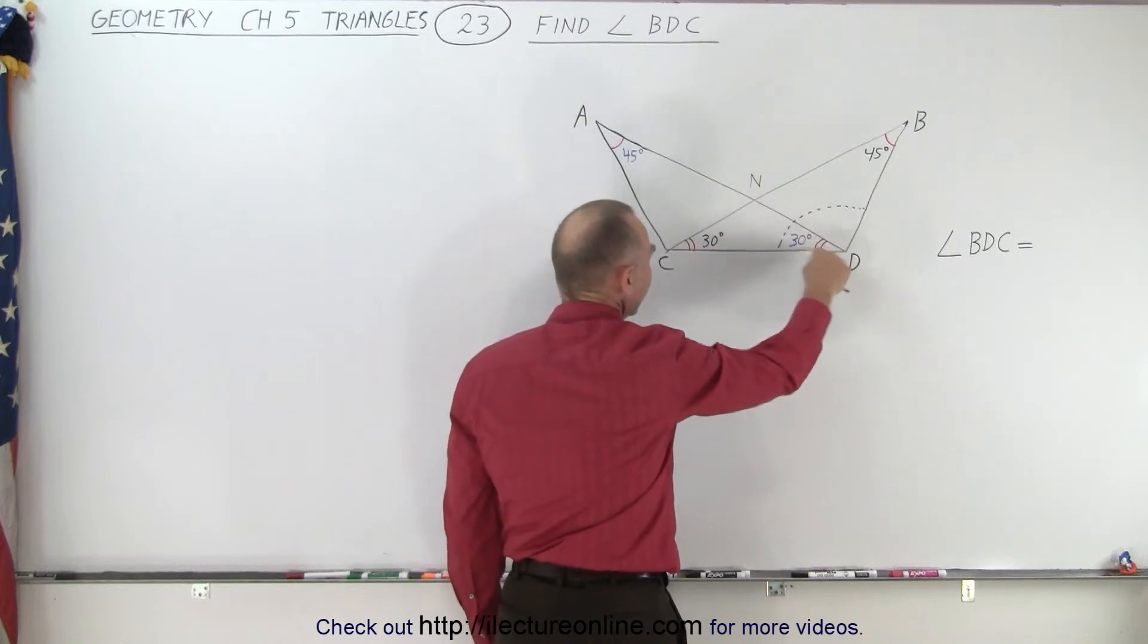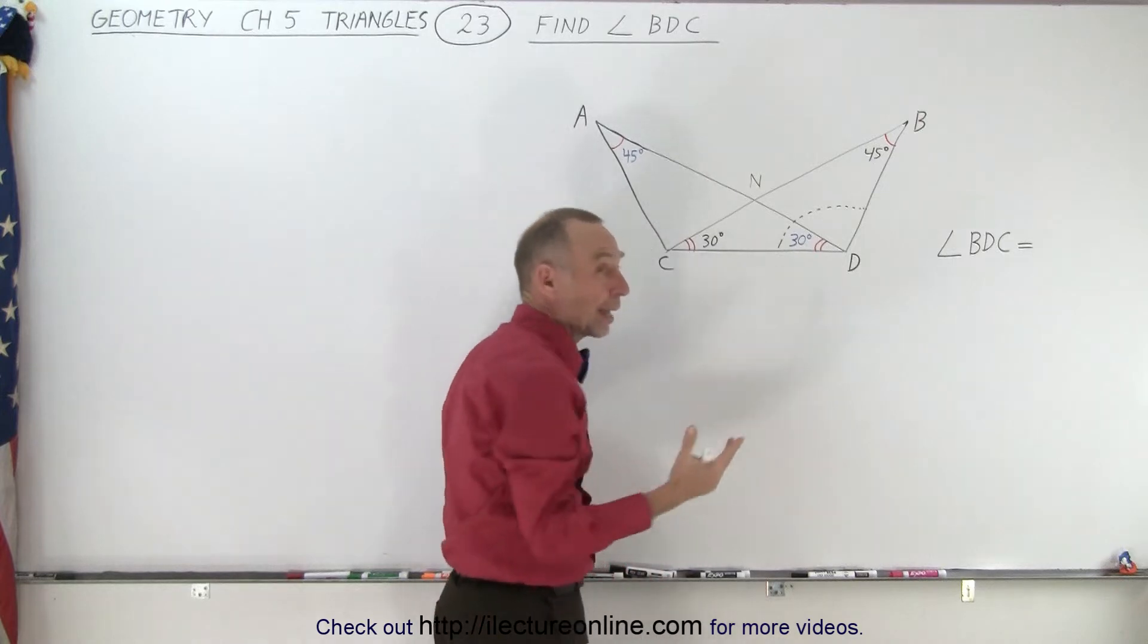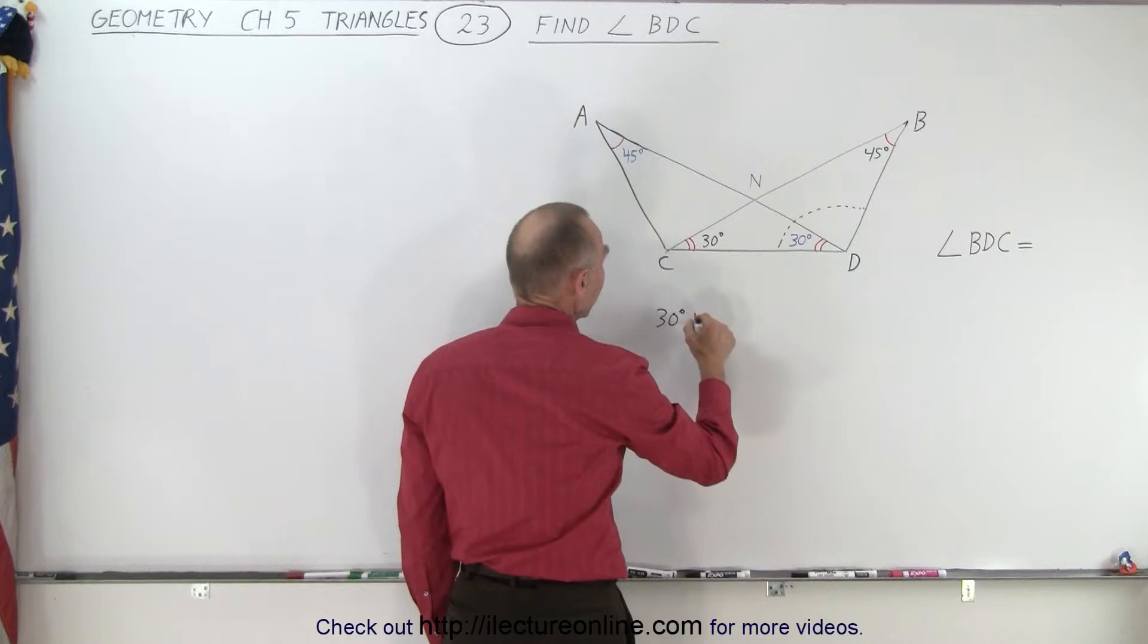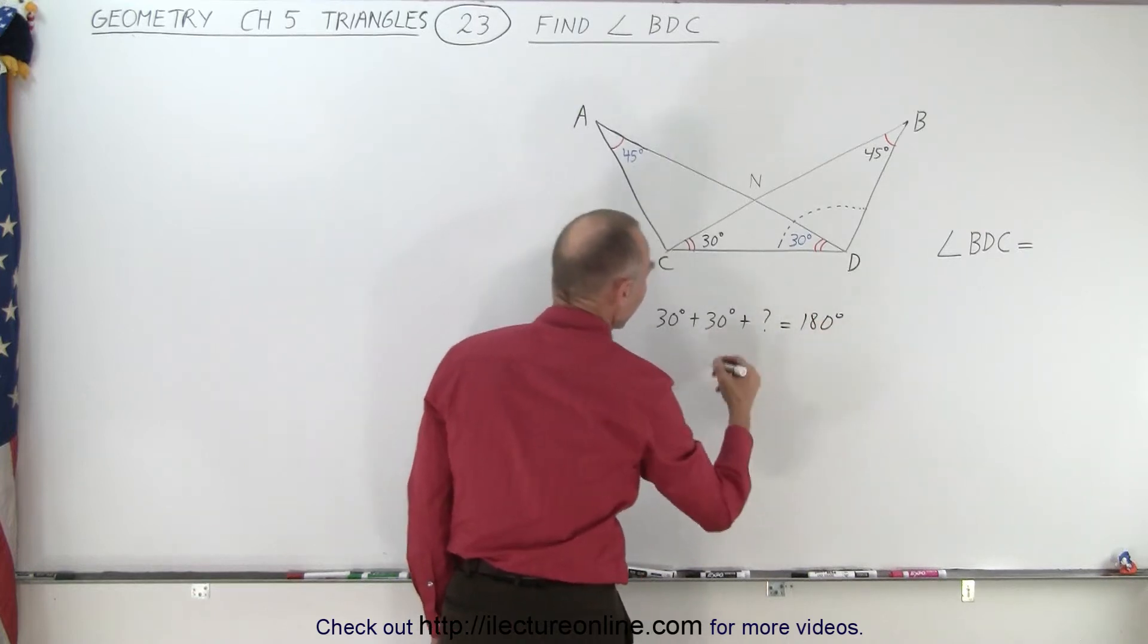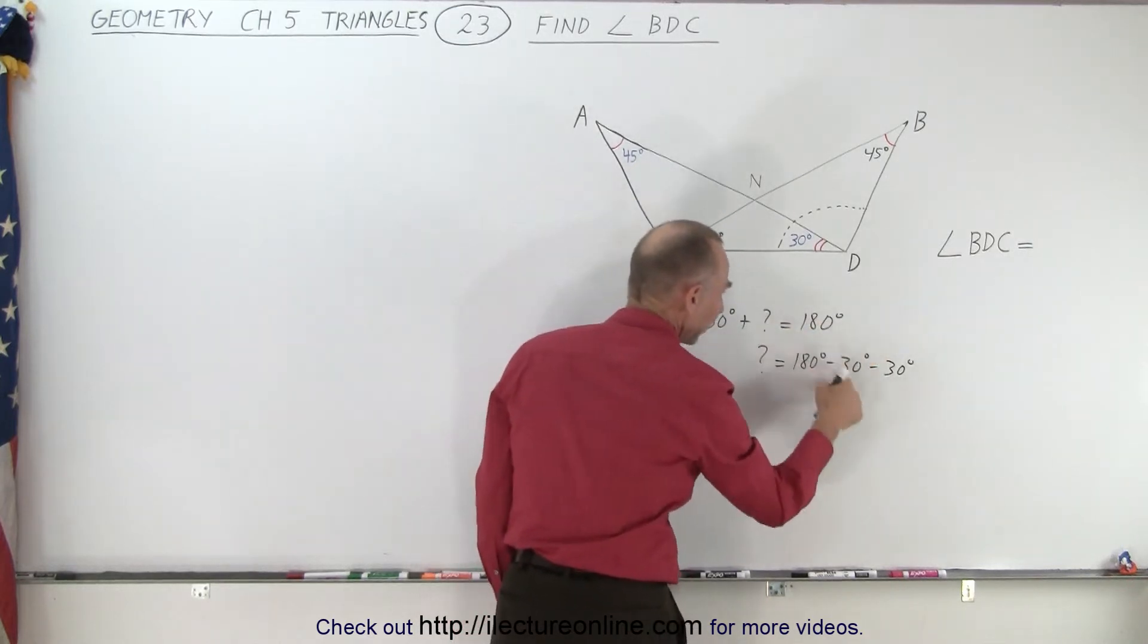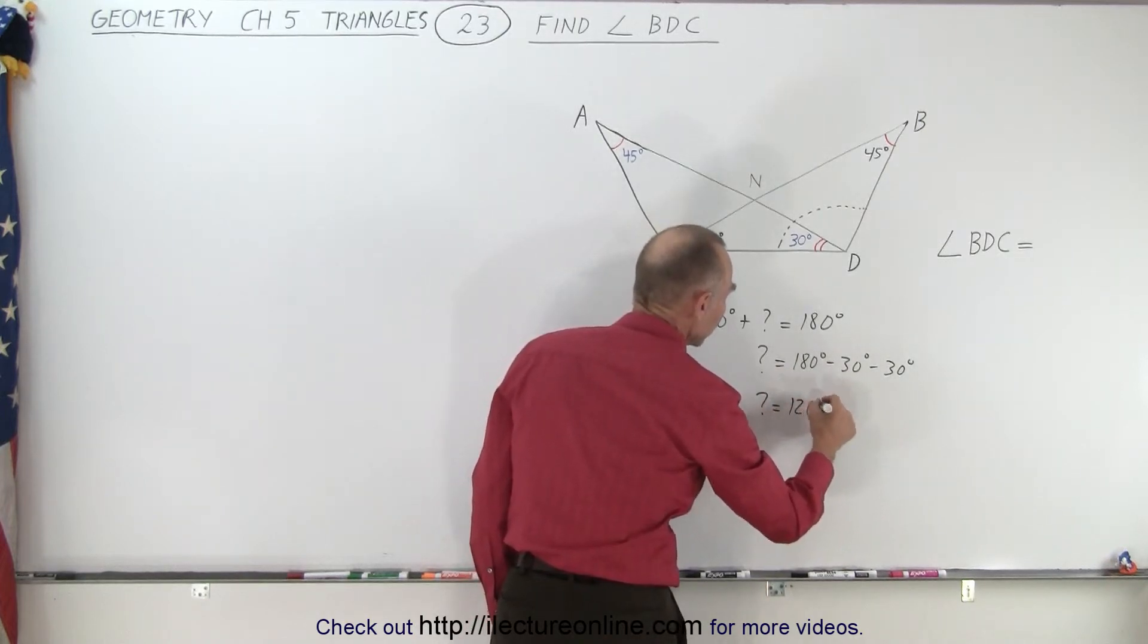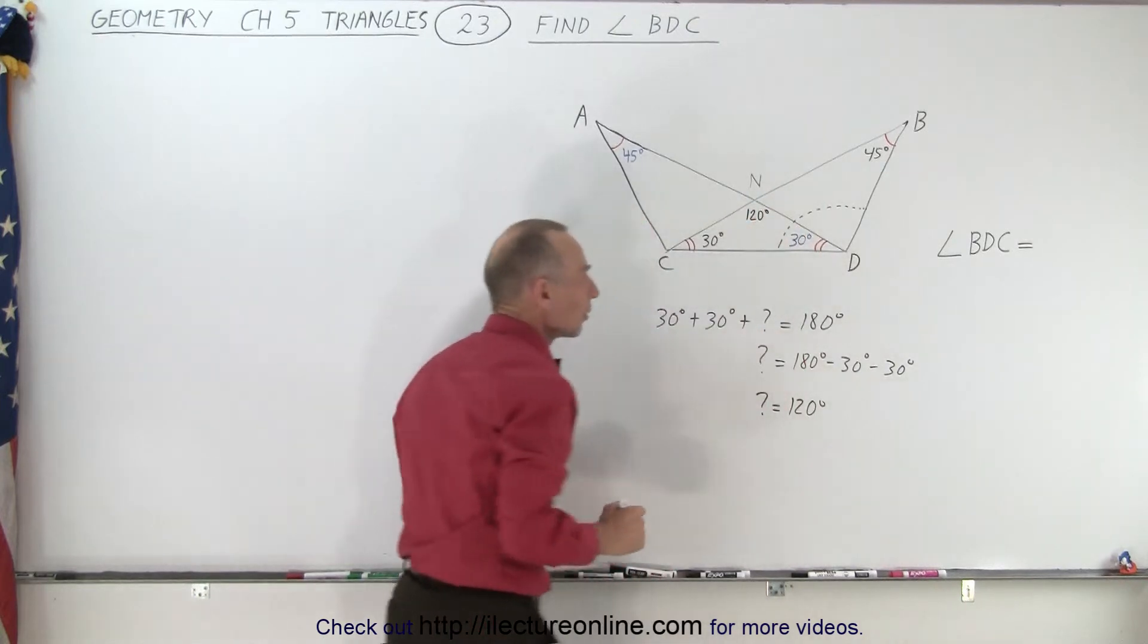But first let's take a look at this triangle. There's a triangle over here and notice it has three angles. And all three angles must add up to 180 degrees. So 30 degrees plus 30 degrees plus the unknown angle right over here must add up to 180 degrees. That means the unknown angle is equal to 180 degrees minus 30 degrees and minus 30 degrees. When I move these two to the other side they become negative. 180 minus 60, the unknown angle is 120 degrees. Which means this angle right here is an angle of 120 degrees.